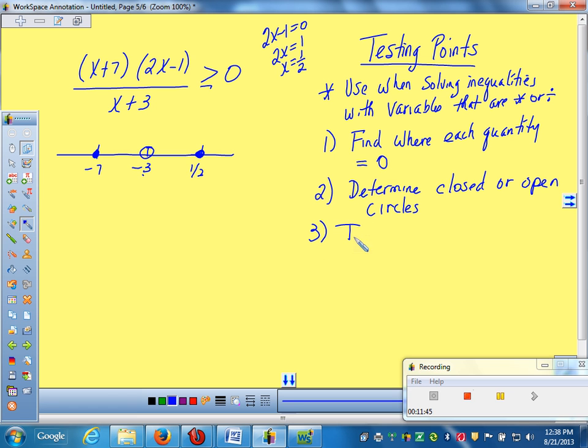Now your next step, you're going to test a point in each interval. What you have to do, each one of these sections, we've divided this thing into four pieces. We've got one, two, three, four pieces. We have to figure out whether each piece is positive or negative.